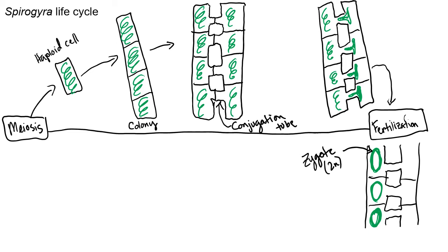So because we're in a haplontic life cycle, our zygote is going to be the only diploid cell that is going to do meiosis to make haploid cells. And that is our Spirogyra life cycle.